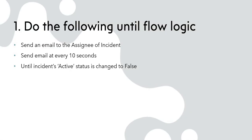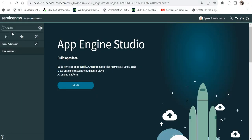The first example is the 'Do the Following Until' flow logic. We will be sending an email to the assignee of the incident at every 10 seconds, and we will keep sending that email until the status of the incident is active. When the status changes to false, we will stop sending those emails. Let's go ahead and create that in flow designer — I am in my ServiceNow instance.